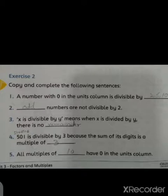Next, question number 4: 501 is divisible by 3 because the sum of its digits is a multiple of 3. Because class, when we add 5 plus 0 plus 1, then you have 6, so 6 is divisible by 3. So you have to write 3 in the blanks. Come to the next: all multiples of 10 have 0 in the unit column. Class, if you read the 10 times table, you will always have zero. Is that right?